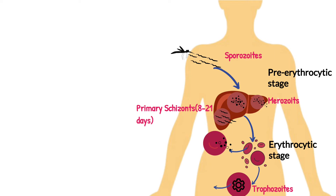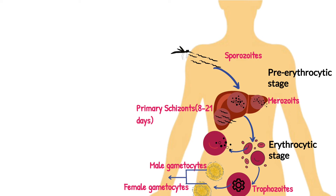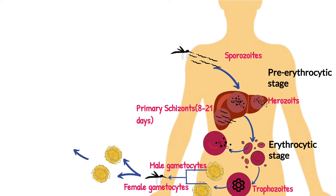Now, the other phase of trophozoites is entering a sexual cycle. With this, the trophozoite is differentiated into two gametocytes, namely male and female gametocytes. When a non-infected mosquito approaches the human for a blood meal, these gametocytes are quickly passed into the mosquito's body with the sucked blood.